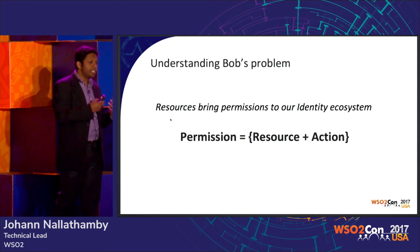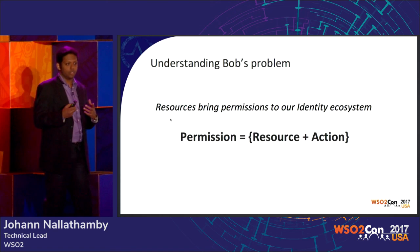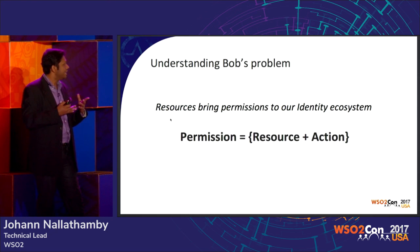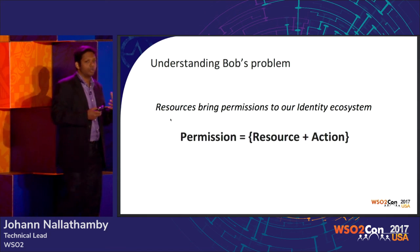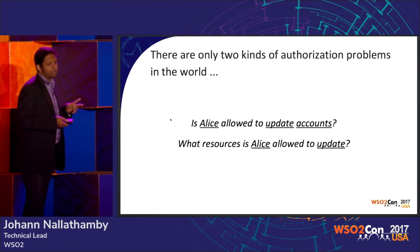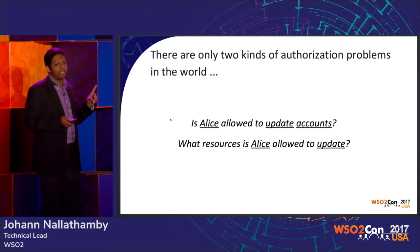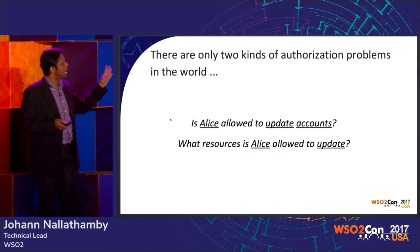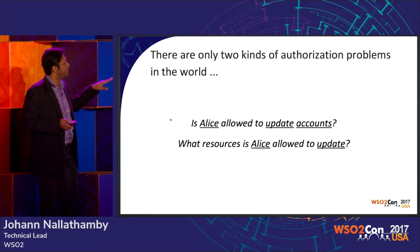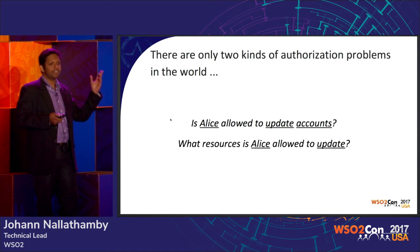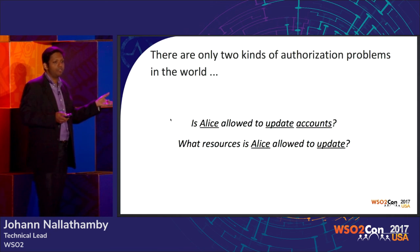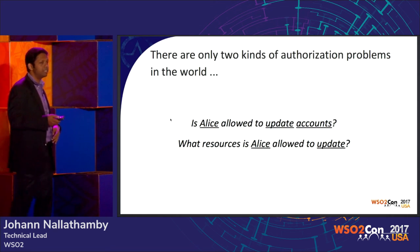Resources bring permissions to the system — a permission is a resource plus an action. There are exactly two types of authorization problems: first, is Alice allowed to update accounts? — the answer is yes or no. Second, what resources is Alice allowed to update? — the answer is a collection of resources, users, or actions.